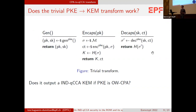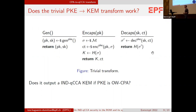We can wonder whether the trivial PKE-to-KEM transform works. In this trivial transform, GEN is the gen function of the underlying PKE. When we encapsulate, we sample a random seed or message, encrypt this seed, and the key is the hash or key derivation function applied on the seed. When we decapsulate, we simply decrypt the ciphertext to get the seed and hash it. We can wonder whether this transform outputs an IND-QCCA KEM if the PKE is only one-way secure.